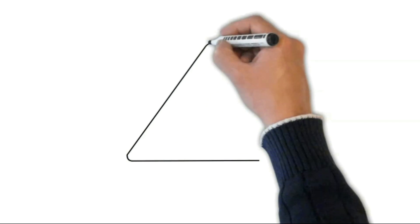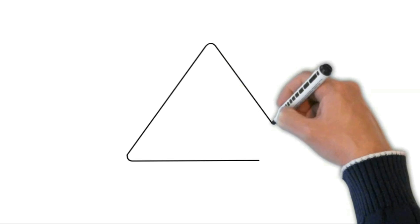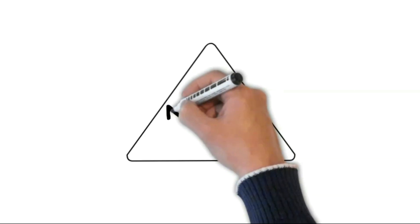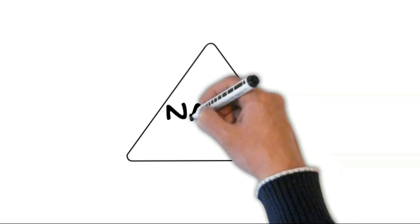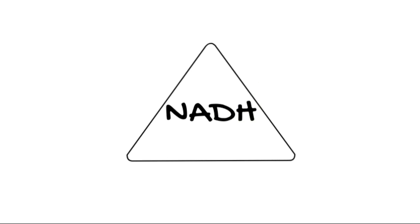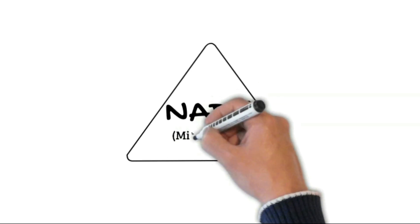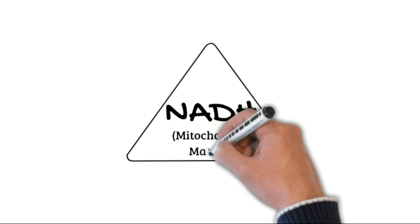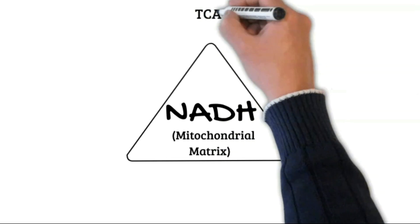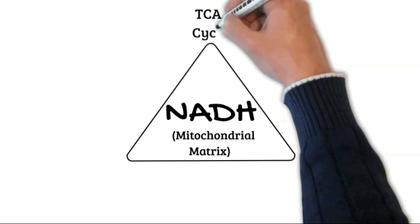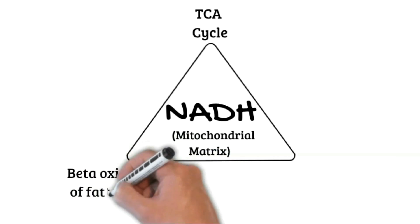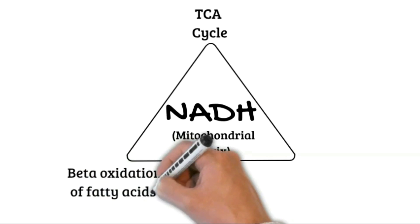Before we move on to the actual chain, we need to know that Complex I receives its electrons from NADH. This NADH is present in the mitochondrial matrix and is supplied from the TCA cycle, beta oxidation of fatty acids, or the malate-aspartate shuttle system.